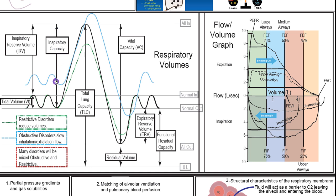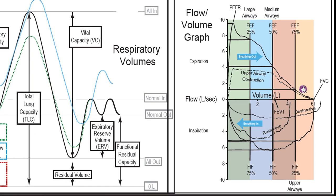A lot of disorders are going to be mixed between obstructive and restrictive. A way to visualize the rates of inspiration and expiration is to construct something called flow volume loops. Essentially, we start at exhalation at zero, breathe out to a peak, which is the peak expiratory flow rate, and this rate basically gives an indication of how functional the trachea is.